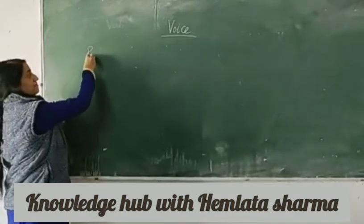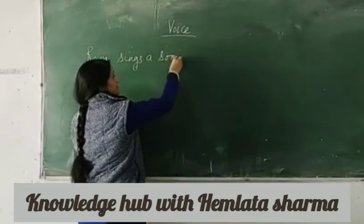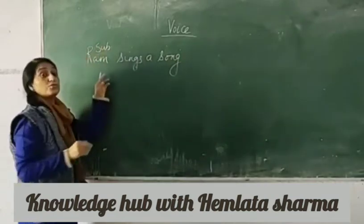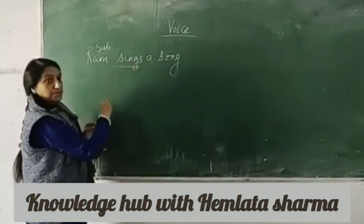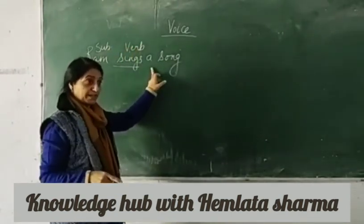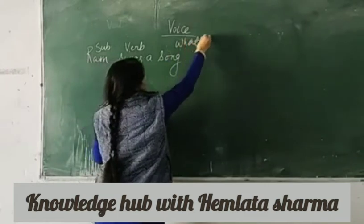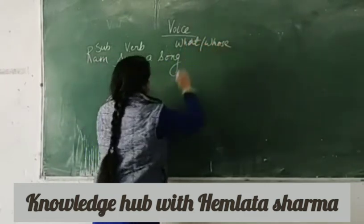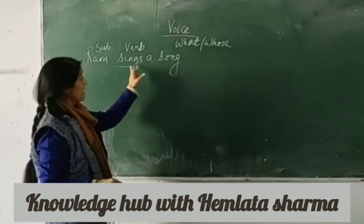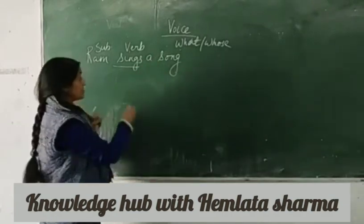Let's take a sentence: Ram sings a song. In this sentence, Ram is a subject — subject means doer — and sings is the verb. To verify whether something is an object, we always ask a question of 'what' or 'whose.' What does Ram do? Ram sings a song. So 'a song' is answering it — therefore, a song is an object. Such kinds of sentences are known as transitive sentences.